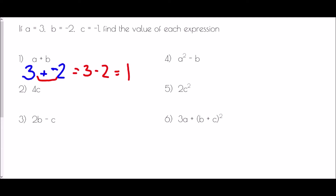In number 2, we have 4c, which means 4 times whatever c is. C is negative 1, so 4 times negative 1. Multiplying a positive by a negative gives a negative, and 1 times 4 is 4, so the answer is negative 4.